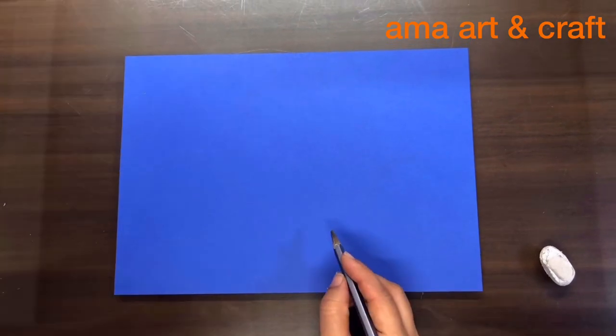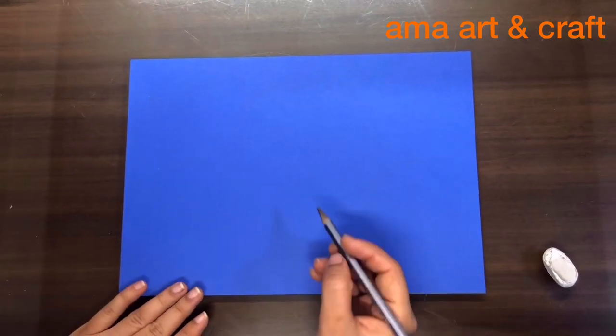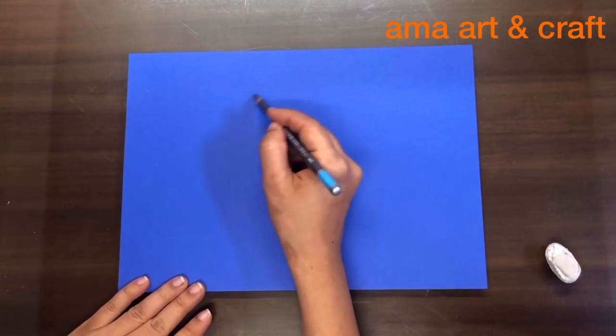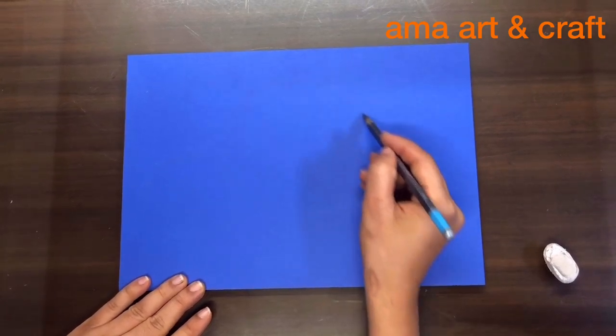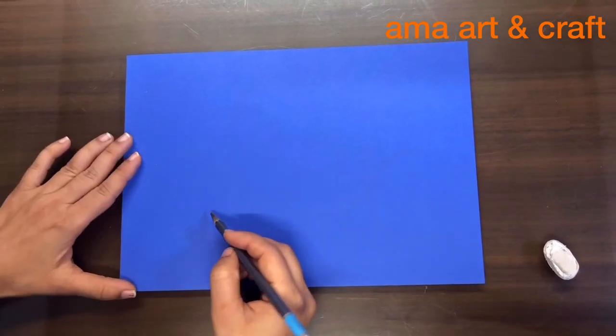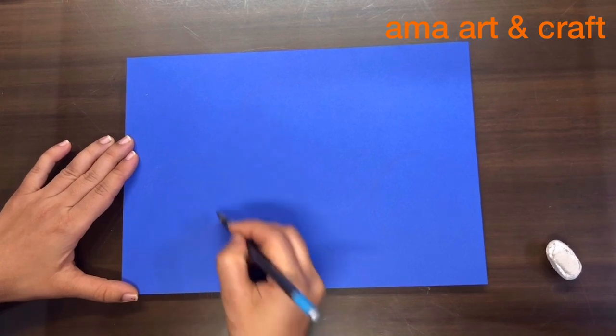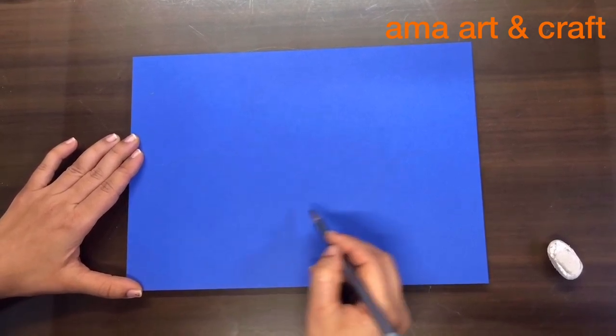Take any dark color paper. First draw a big circle with pencil. Draw very light and draw a small circle.